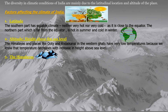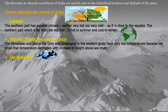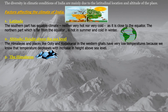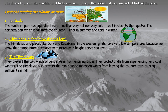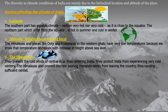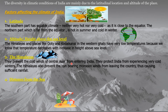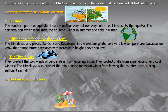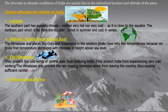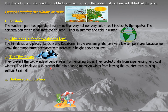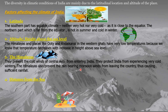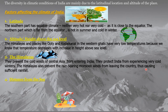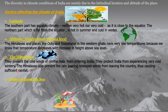The third factor which affects the climate of India is the Himalayas. They prevent the cold winds of Central Asia from entering India, thus protecting India from experiencing very cold winters. The Himalayas also prevent the rain-bearing monsoon winds from leaving the country, thus causing sufficient rainfall.